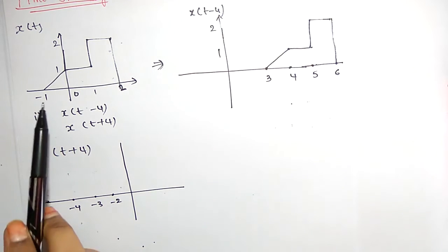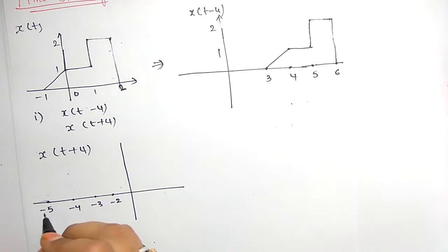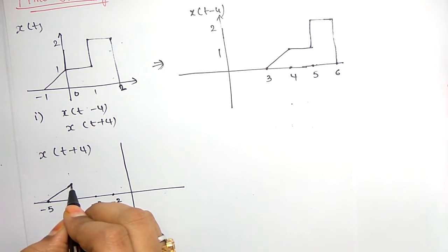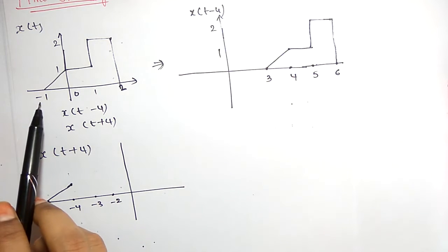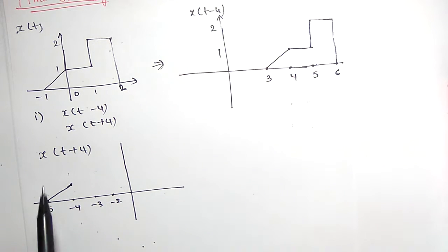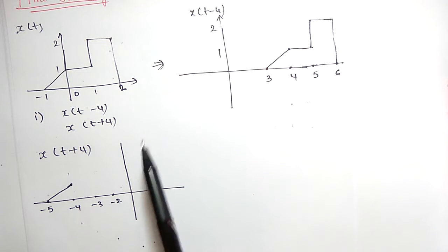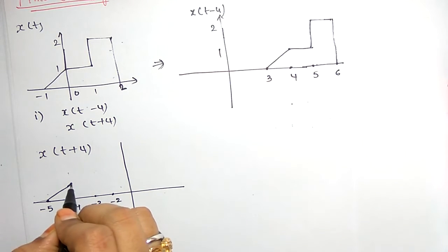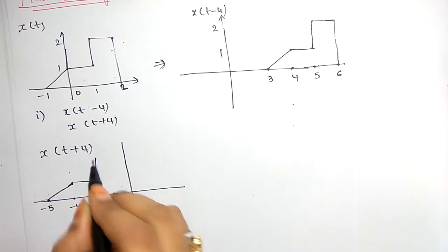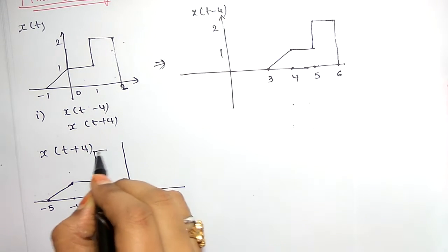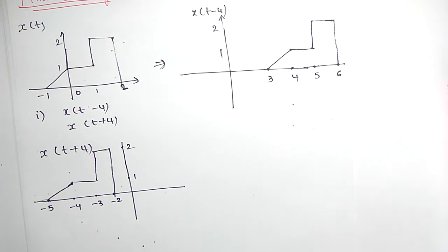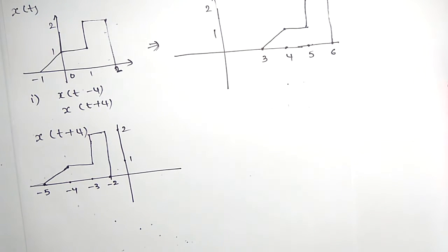So we have shifted minus 1 to minus 5, meaning the graph starts from minus 5. The lower limit minus 1 changes to minus 5, and the upper limit 2 changes to minus 2, so the graph should start from there onwards. This is about time shifting in the continuous domain.